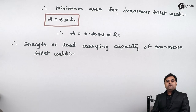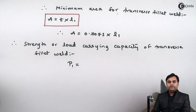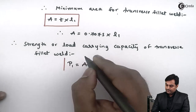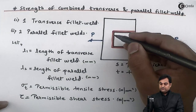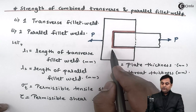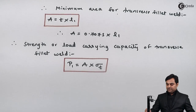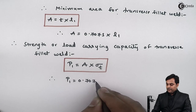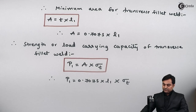Therefore the strength, or load-carrying capacity, of the transverse fillet weld is denoted P1 and equals area multiplied by tensile stress, because the transverse weld is perpendicular to the load and is subjected to tension. So P1 equals 0.707·S·L1·σT. This is equation number 1.